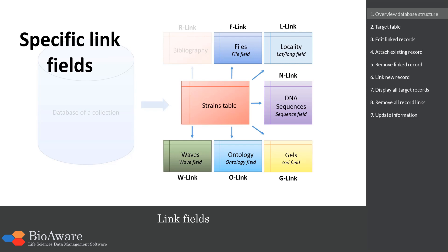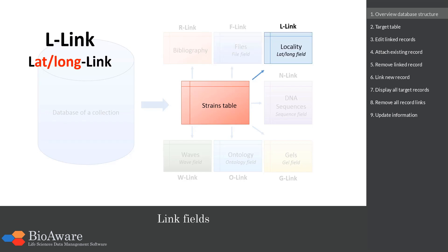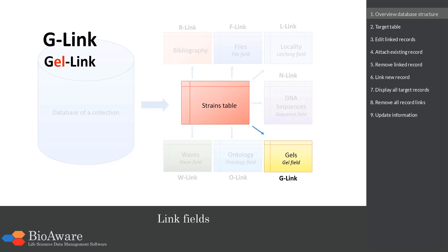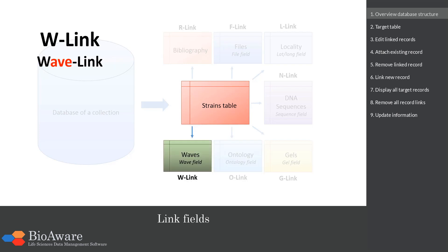We also have specific link fields. They are created so they can be used for the analysis tools, such as the identification or the clustering. Contrary to the R-link field, we do need specific fields in the target table. For example, we can create a file link field or F-link pointing to a table containing a file field. The L-link field points to a table containing a latitude-longitude field. The N-link field points to a table containing a sequence field. The G-link field points to a table containing a gel field. The Ontology link field points to a table containing an ontology field. And the W-link field points to a table containing a wave or W field.